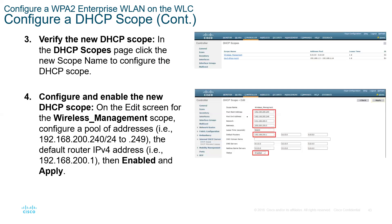After you name it, verify the new scope. You can see the new scope — wireless management — has been created. But from the pool information, these are default IP addresses of 0.0.0.0, meaning the pool addresses are not configured yet. Step four is where we configure the pool. You can see addresses configured from 192.168.200.240 to 249.